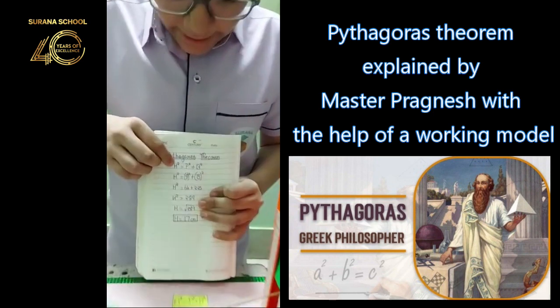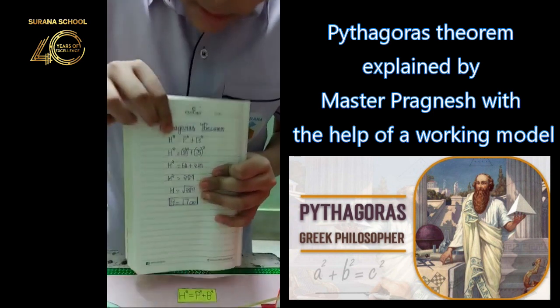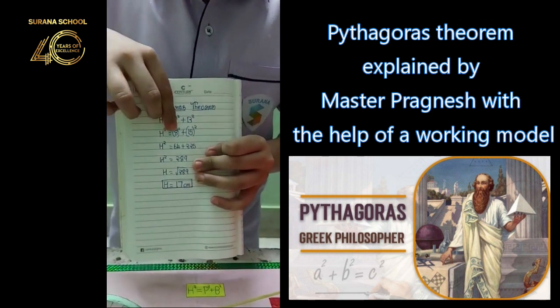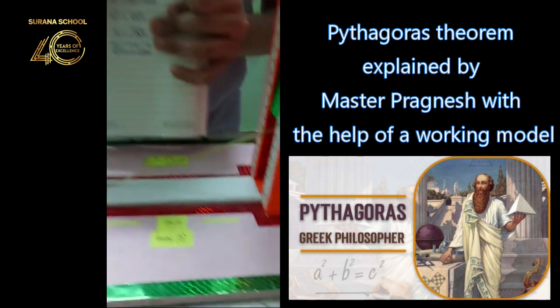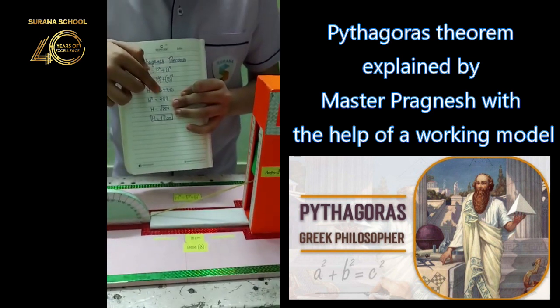By this first, H square hypotenuse square which is equal to perpendicular square plus base square. Hypotenuse square which is equal to 8 square and 15 square which is the base. Our value is 64 plus 425.